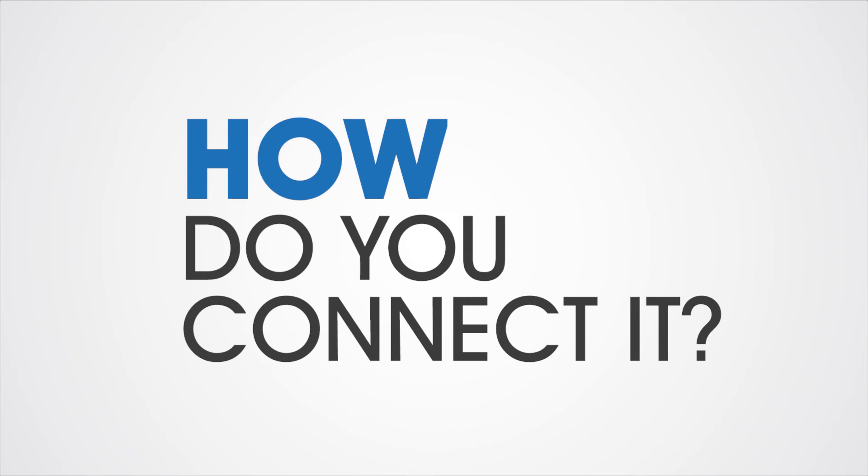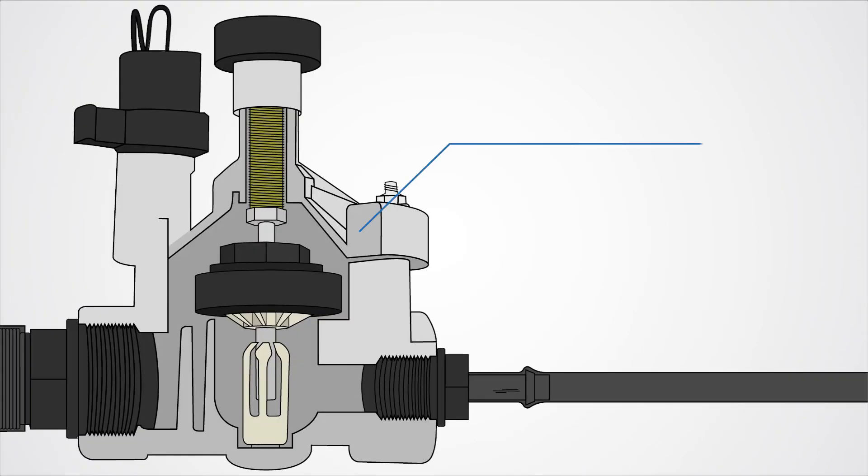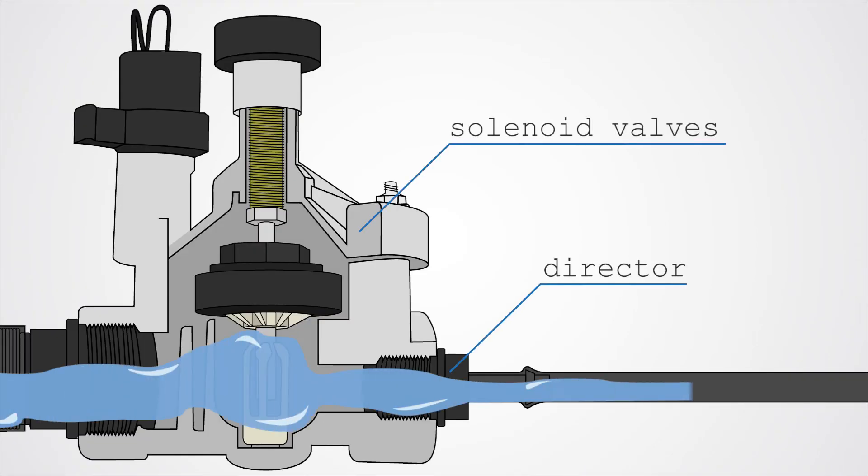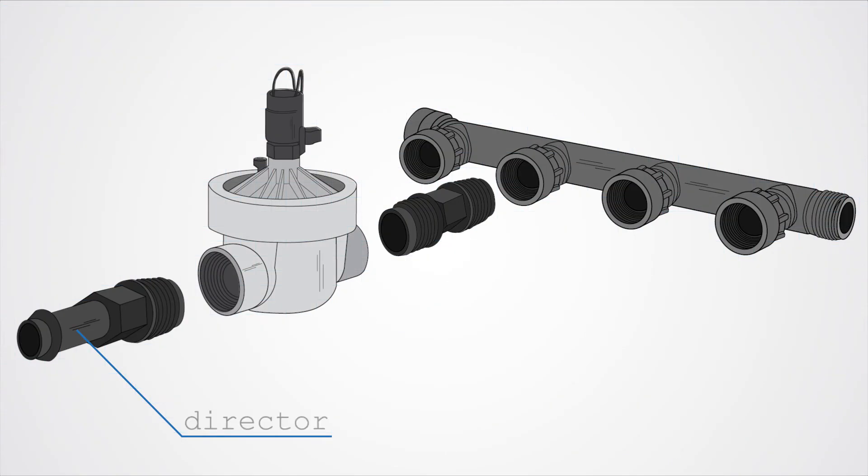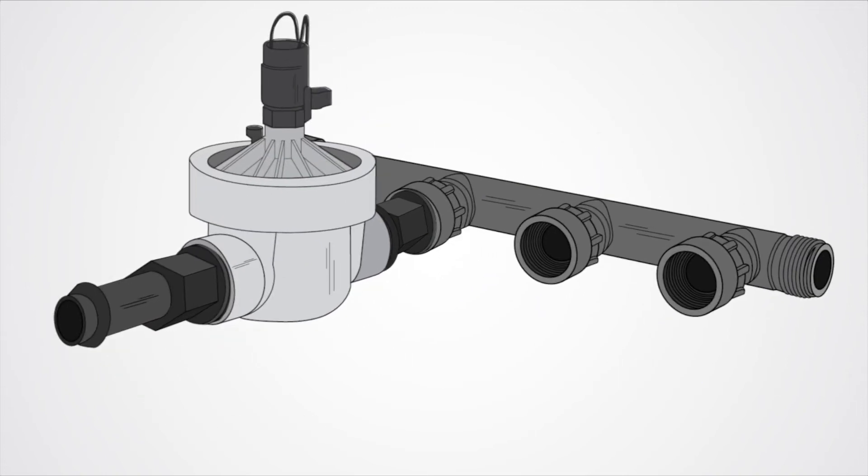To connect your automation to your irrigation system, you'll need these things. The director does what it says: it directs the water from the solenoid valve into the poly pipe through to your irrigation system. The threaded end of the director screws onto the solenoid valve, and the nipple connects the manifold to the solenoid for the watertight connection.